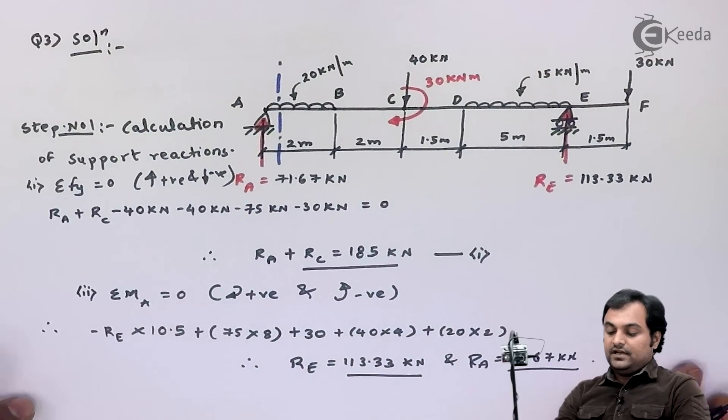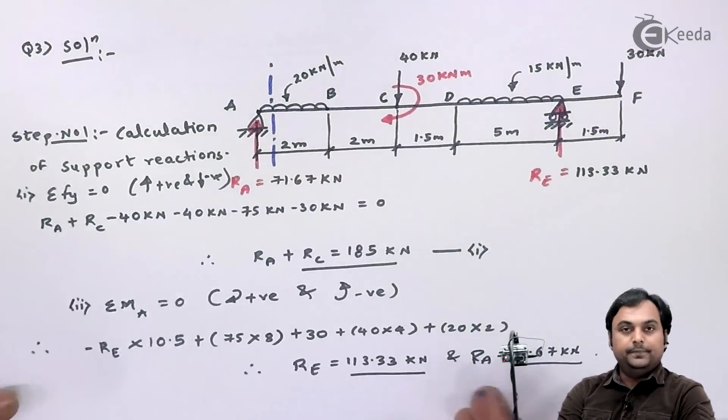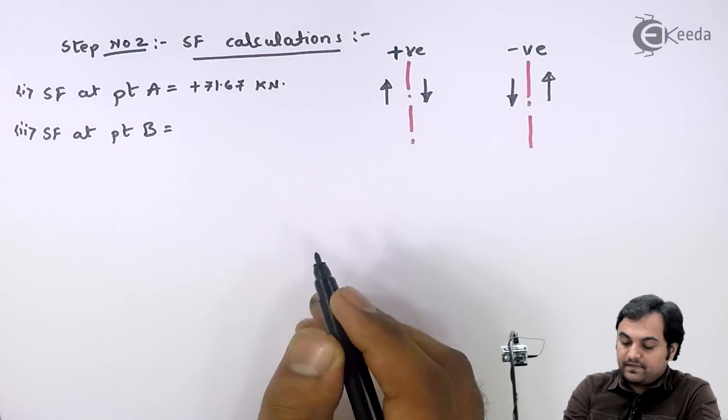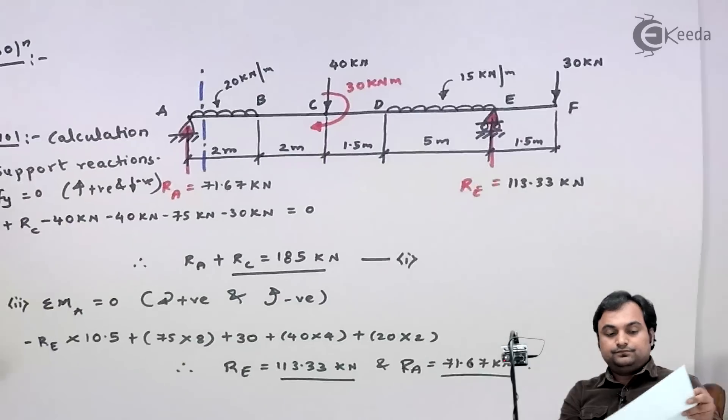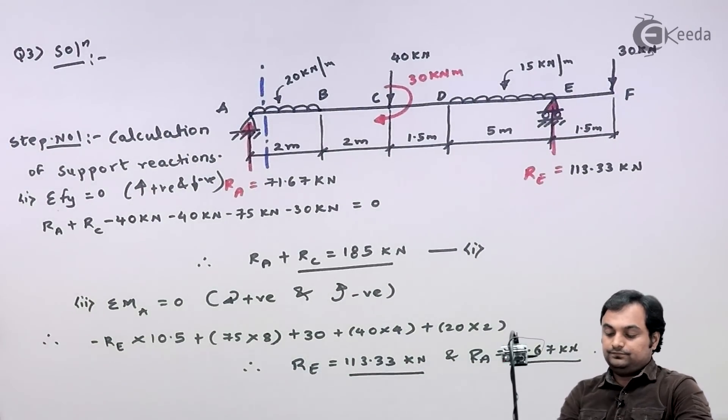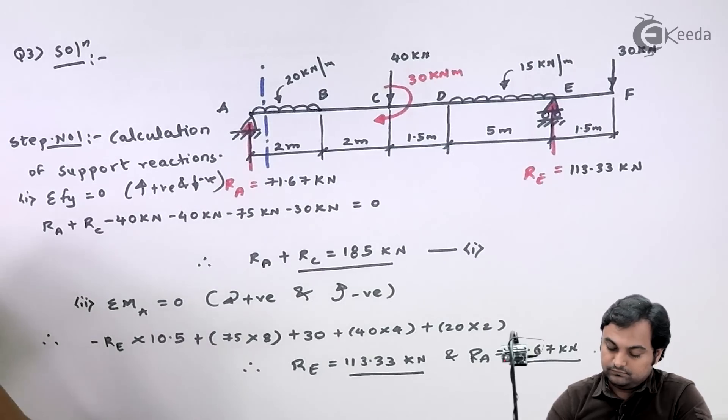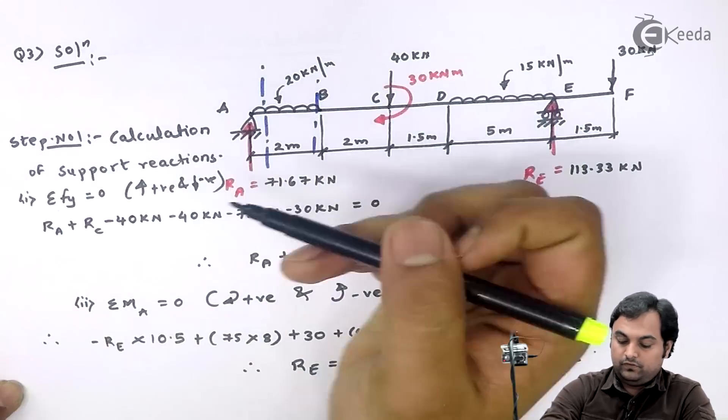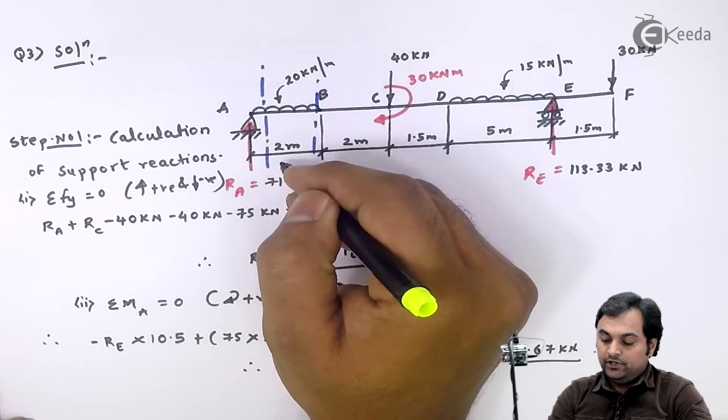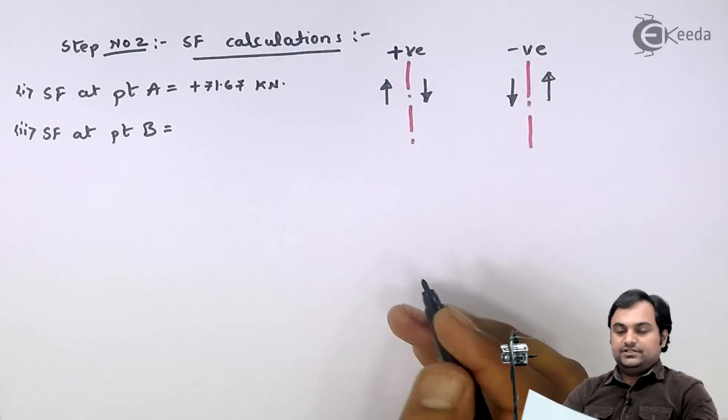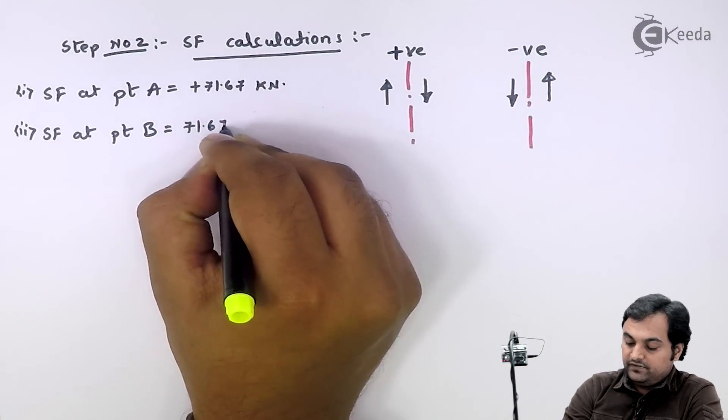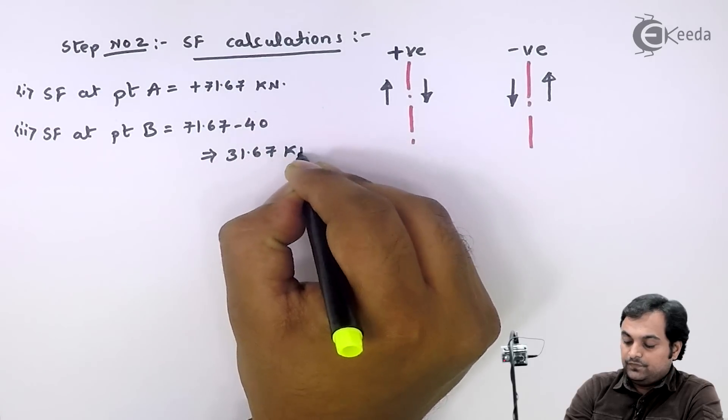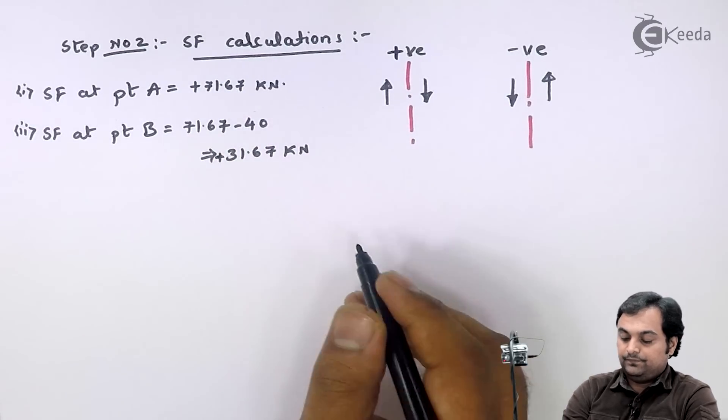Then after this I'll calculate shear force at point B. My section is at point B. Here I have 71.67 kN as upward, 20 into 2, that's 40 in downward direction. So 71.67 minus 40 gives me 31.67 kN positive.